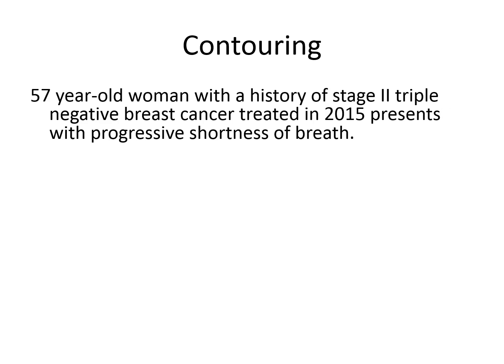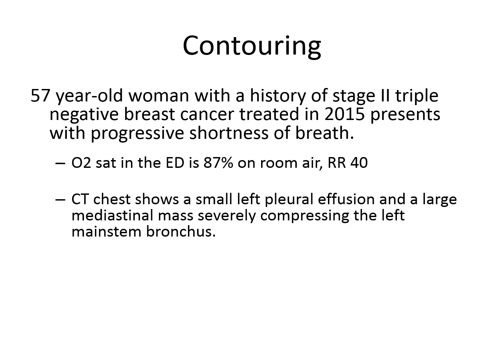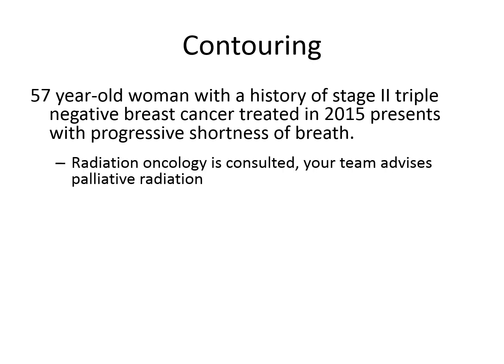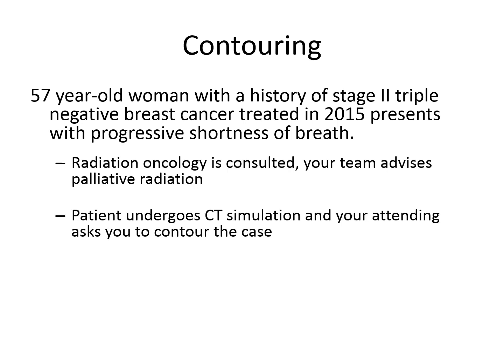Here's a relevant example. A 57-year-old woman with a history of stage 2 triple negative breast cancer treated in 2015 presents with progressive shortness of breath. Her oxygen saturation in the emergency department is 87% on room air, with a respiratory rate of 40. A CAT scan shows a small left pleural effusion and a large mediastinal mass severely compressing the left main stem bronchus. The patient undergoes stent placement, her respiratory status stabilizes, radiation oncology is consulted, and your team advises palliative radiation. The patient then undergoes CT simulation, and your attending asks you to contour the case.